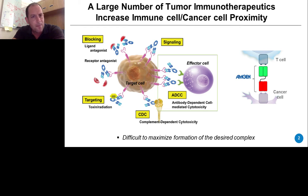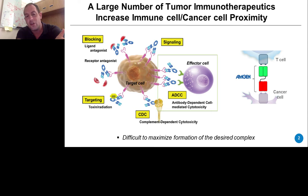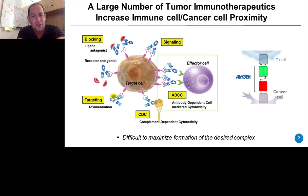This general idea of modulating proximity is not new in tumor immunotherapy. Therapeutic antibodies engineered to recognize tumor antigens highly expressed on cancer cell surfaces represent one popular example. These antibodies bind both to receptors highly expressed on the tumor and to immune cell receptors like natural killer cells, increasing the proximity of the immune effector cell with the cancer cell leading to targeted cytotoxicity — a mechanism known as ADCC, or antibody-dependent cell-mediated cytotoxicity.